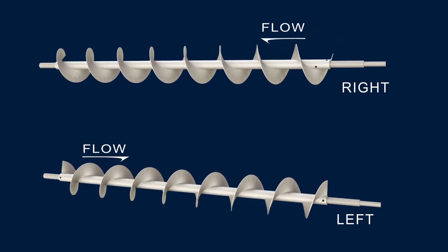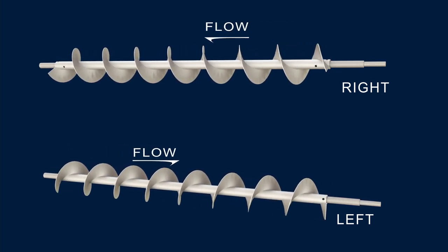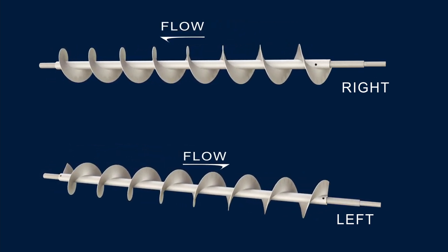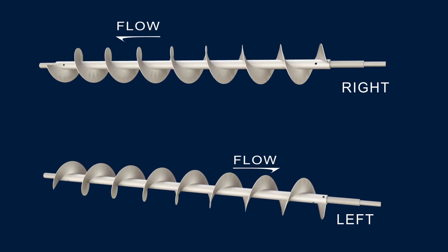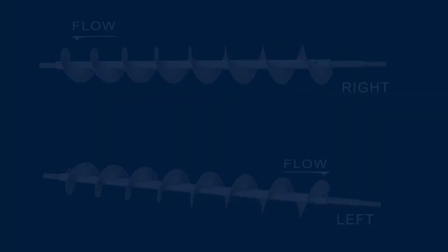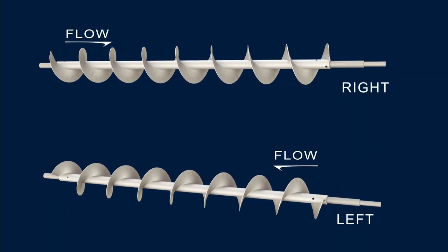Product flow is determined by the direction of rotation. If you look at the end of a right hand screw and it is turning counter-clockwise, the product will be moving away from you. Clockwise rotation means the product will be moving toward you.